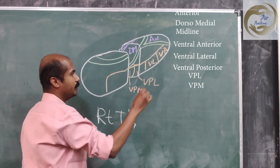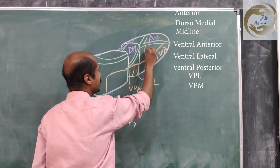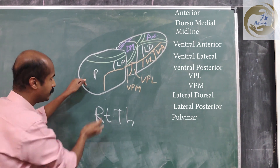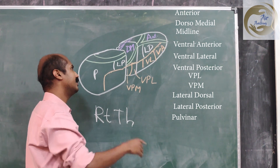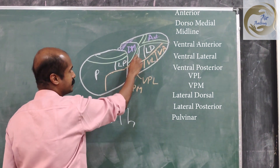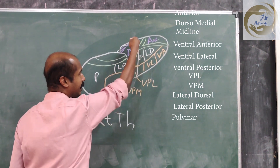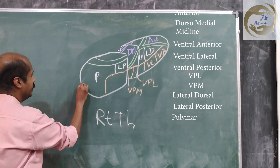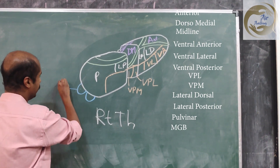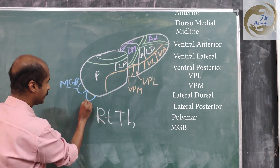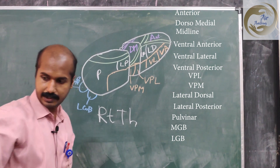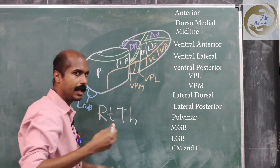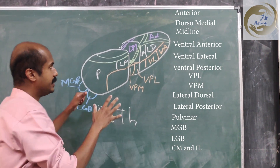On the dorsal tier, the names are a little confusing. You have lateral dorsal (LD), lateral posterior (LP), and pulvinar — the word 'pulvinar' means cushion, referring to the rounded cushion-like posterior part of the thalamus. A useful auditory mnemonic is LDLPP. On the posterior aspect beyond the pulvinar, you have two important geniculate bodies: the medial geniculate body (MGB) on the medial side and the lateral geniculate body (LGB) on the lateral side. Within the internal medullary lamina, there is a large centromedian nucleus and multiple smaller intralaminar nuclei.